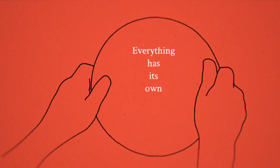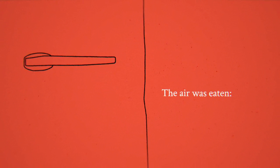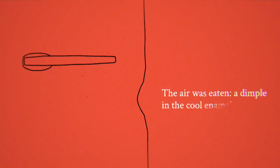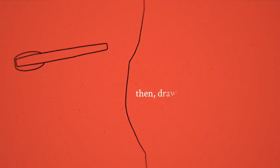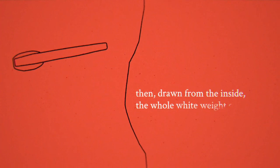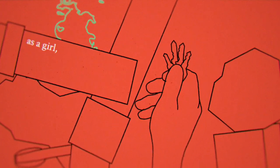Everything has its own way to break. The air was eaten. A dimple in the cool enamel. A crease. Then, drawn from the inside, the whole white plate crumpled with thunks of deep-struck metal.